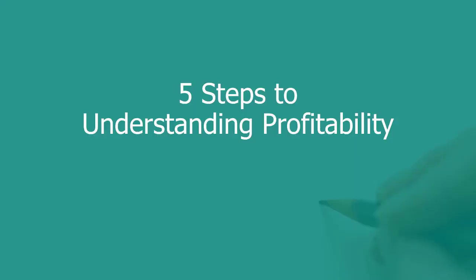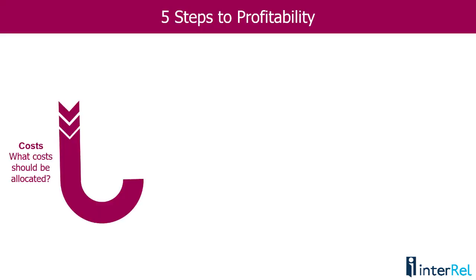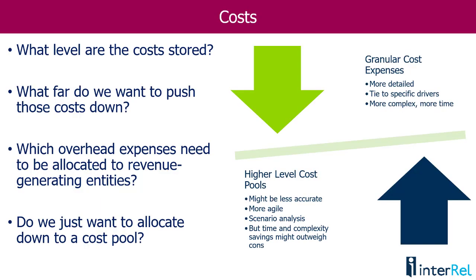There are five steps to building a profitability application. The first step is identifying which costs or revenues you need to allocate. Some of your costs will be direct costs already at the lowest level — by product, customer, location, channel — but some will need to be allocated. Some are granular costs like materials or billable hours. You might know these down to the unit level but not by customer, so you may need to do some multiplication. Then you have overhead costs that all have to be allocated down to some level — you could allocate all the way down to a unit cost or just to a cost pool. The first step is identifying where all those costs are and at what level they are stored.